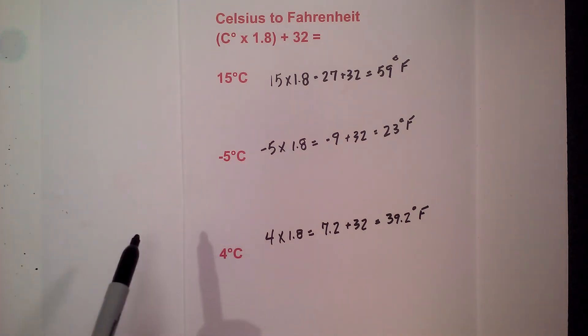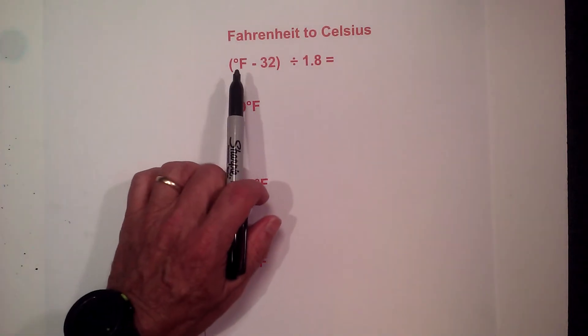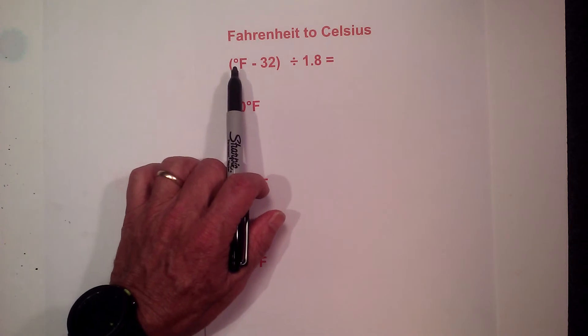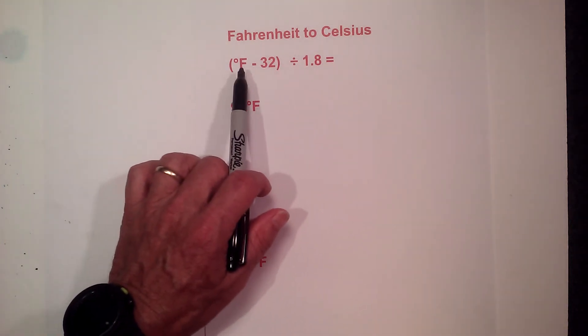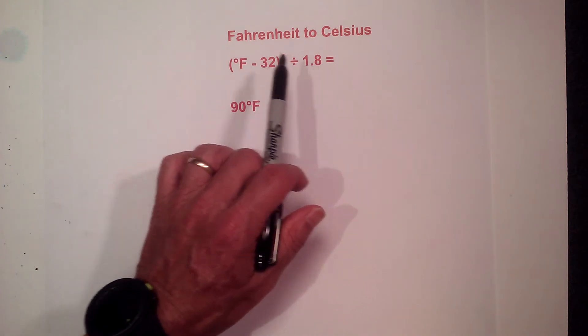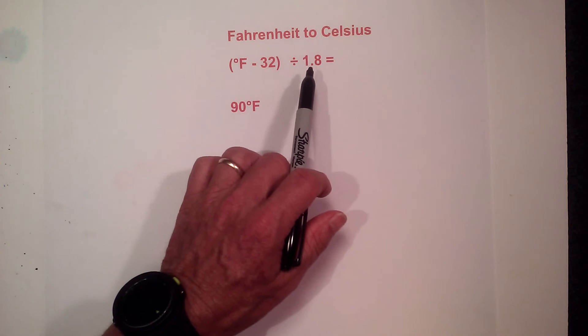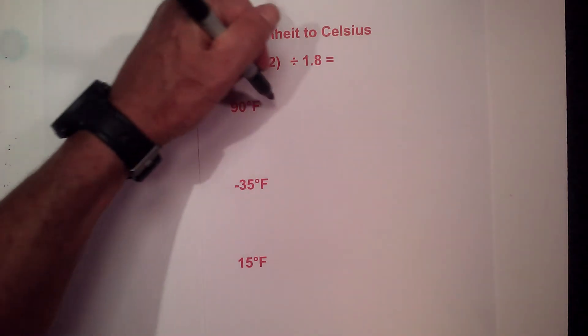Okay next up is Fahrenheit to Celsius. The formula I like to use is take your Fahrenheit degree, subtract 32, and divide by 1.8. You may see it as Fahrenheit minus 32 times 0.555 but I like to keep it consistent. That way you only have to remember 1.8. So let's work some examples.